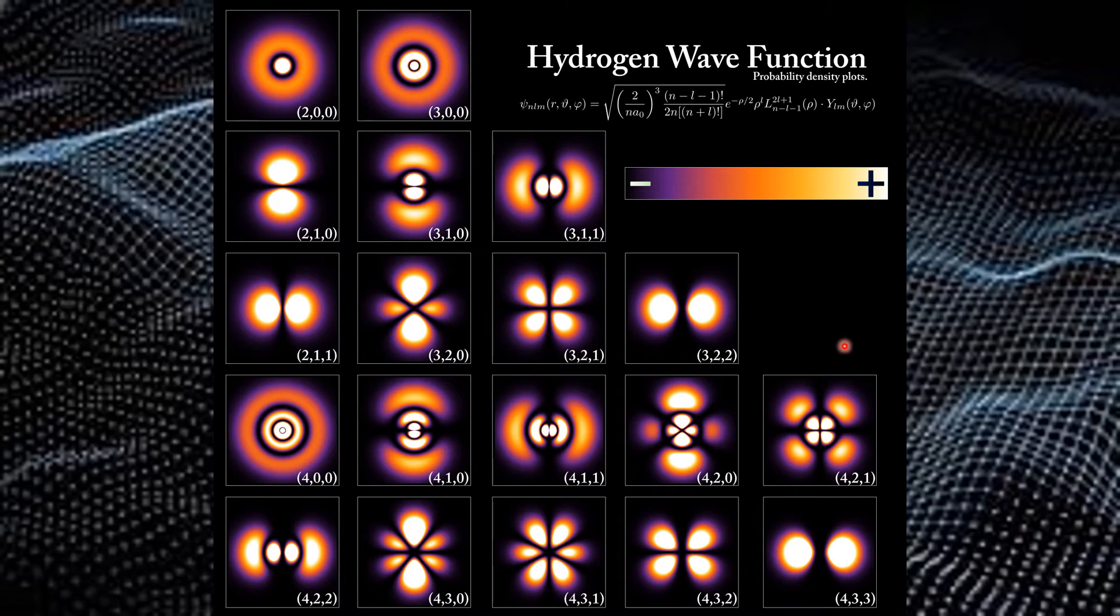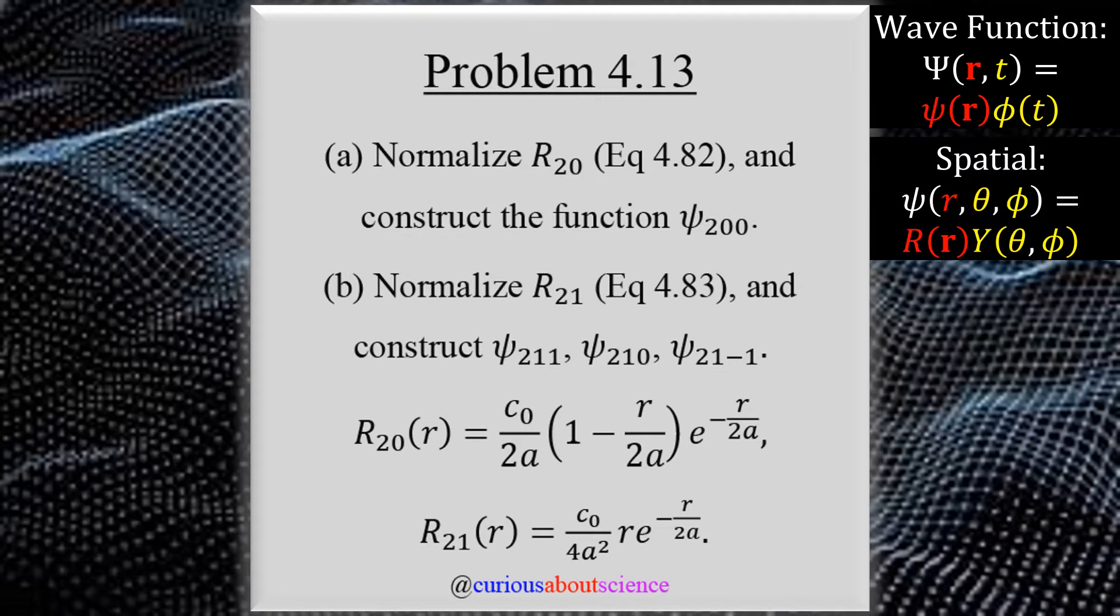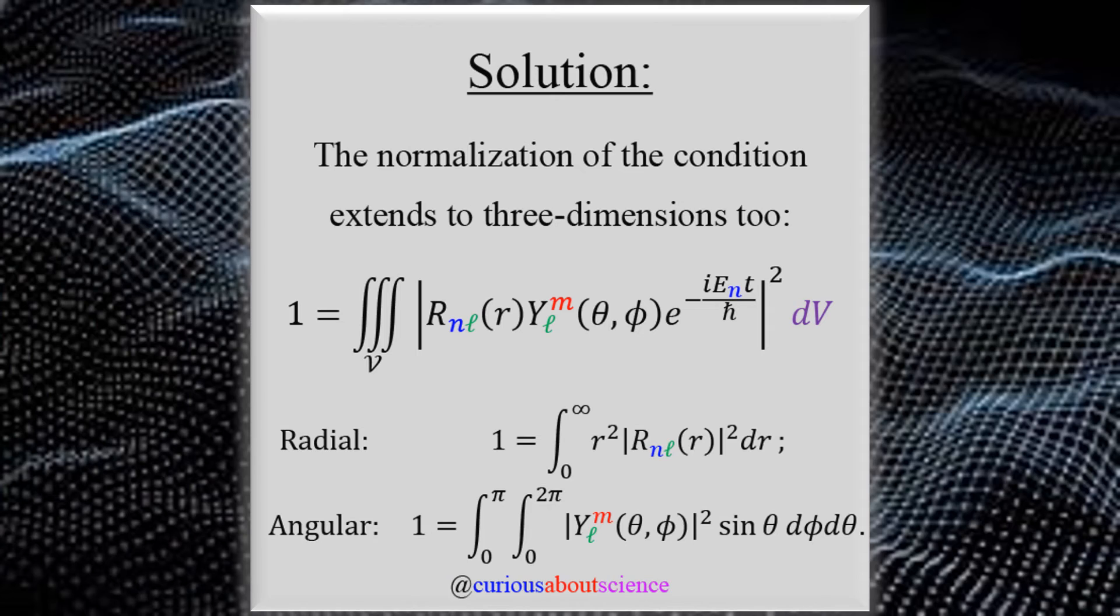All right, let's see what we're actually tasked with doing. In this problem we want to normalize the particular state R_20, which is given below. This is also known as the radial wave function, and then we want to construct the total spatial wave function, lowercase psi of this particular state. And then of course we want to do that for a couple more states just to make sure that we know what's going on. Before we begin though, I would like to mention that there is a free companion PDF that you can use to follow along. The link is below.